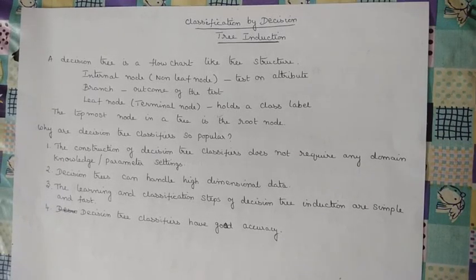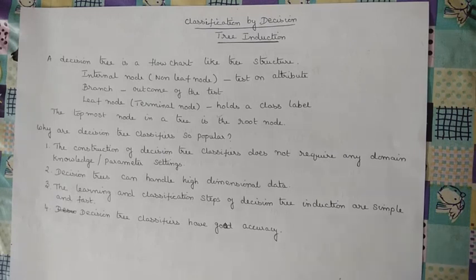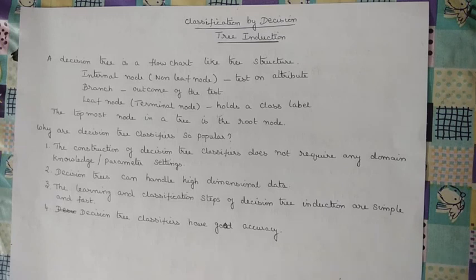We are going to see about decision tree induction. A decision tree is a flowchart-like tree structure. In this you will have a root node, some internal nodes, branches, and leaf nodes. Internal nodes are also called non-leaf nodes; these nodes perform some test on the attributes. Branches represent the outcome of the test, and the leaf nodes — called terminal nodes — hold the class label. The topmost node of the decision tree is the root node.